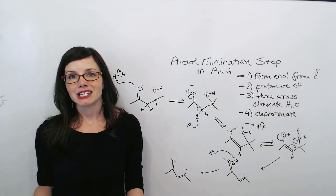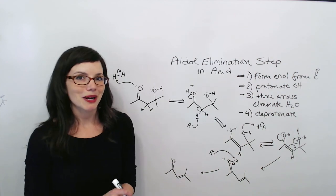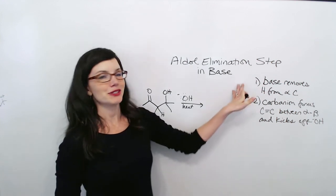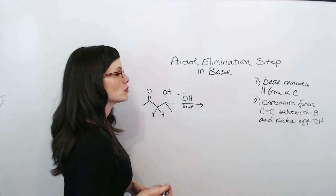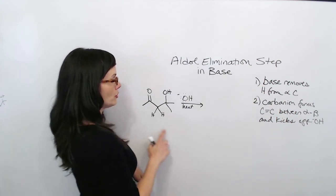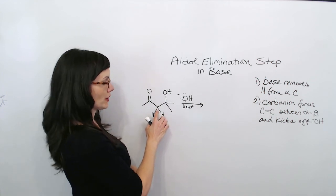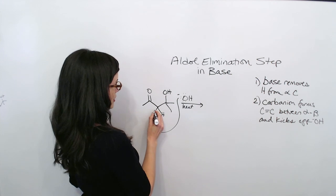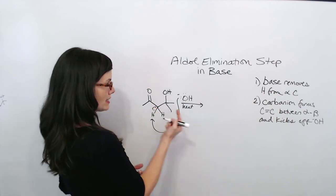Now let's look at this mechanism in base, which thankfully is quite a bit easier. All we need to do for the base-catalyzed mechanism is two easy steps. First, we're going to let our base remove a proton from the alpha carbon.